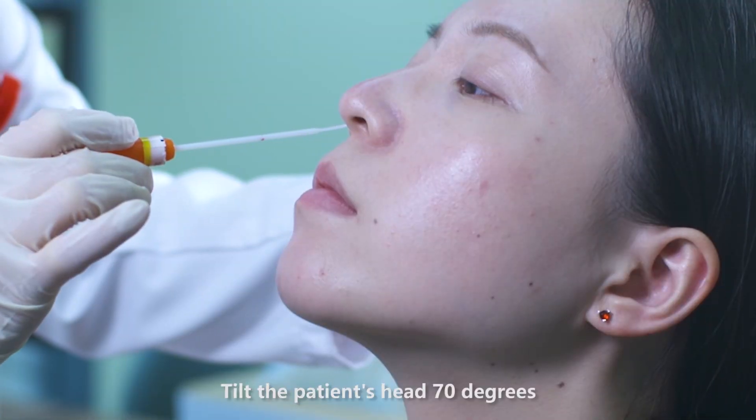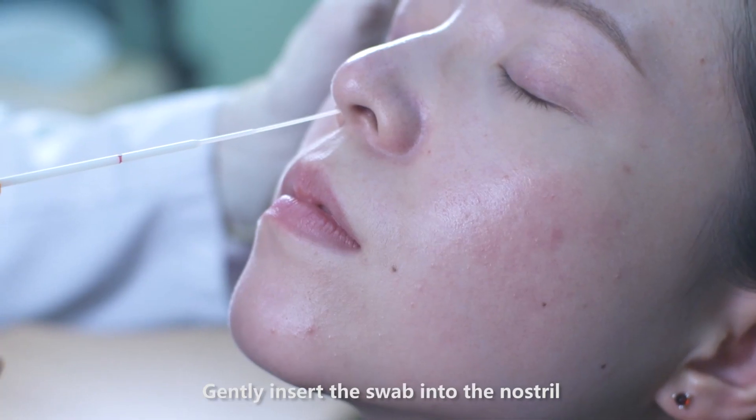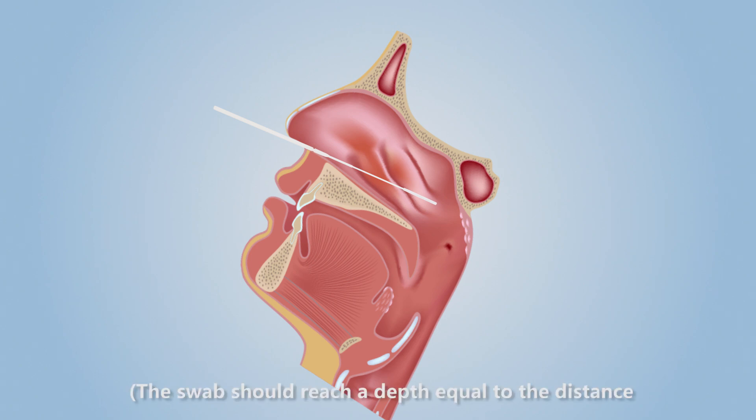Tilt the patient's head 70 degrees. Gently insert the swab into the nostril. The swab should reach a depth equal to the distance from the nostrils to the outer opening of the ear. Leave swab in place for several seconds to absorb secretions. Slowly remove the swab while rotating it.